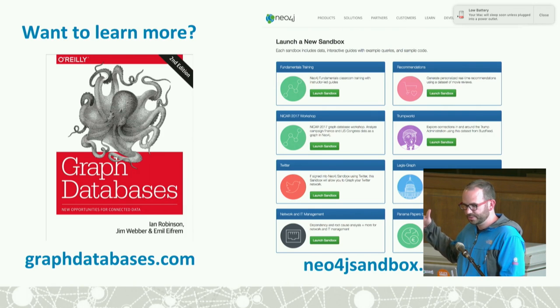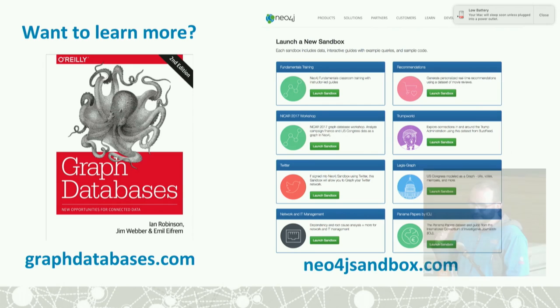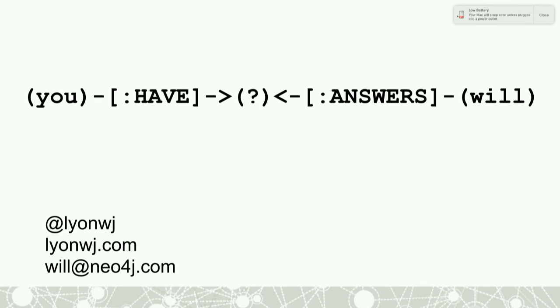If you're interested in learning more, there's the Neo4j Sandbox, which also has a dataset on US Congress and campaign finance, the Panama Papers dataset, and more data science-type examples like building a recommendation system with movie data. I'd encourage you to use that as a starting point for digging in further. With that, I'm just about out of time — two minutes for questions.